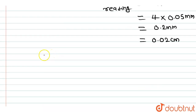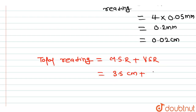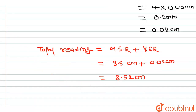The total reading = main scale reading + Vernier scale reading = 3.5 cm + 0.02 cm = 3.52 cm. This is the value of the diameter of the cylinder.